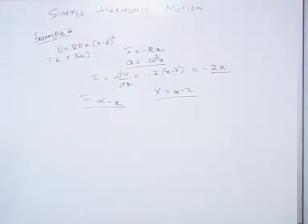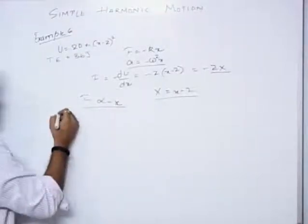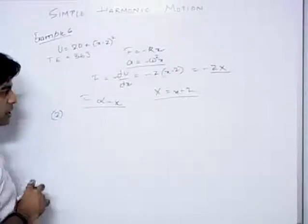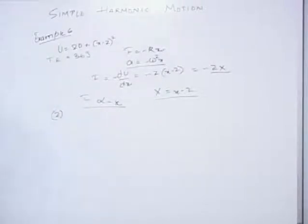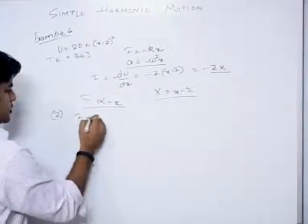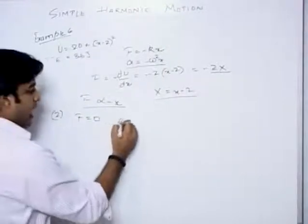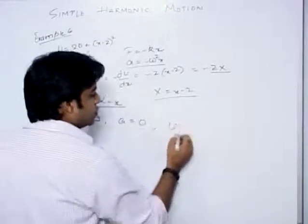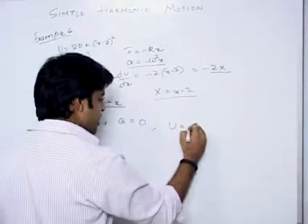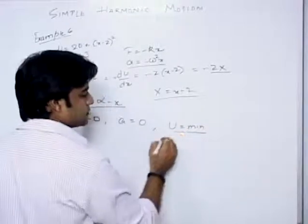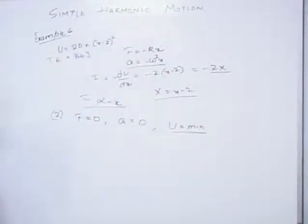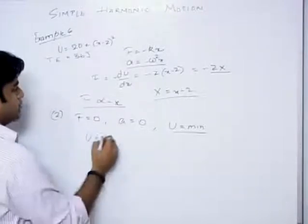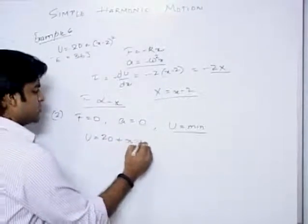Second part: find the mean position. At the mean position, the force is zero, or the acceleration is zero, or the potential energy is minimum. The potential energy is 20 plus (x minus 2) whole square, so we look for its minimum value.